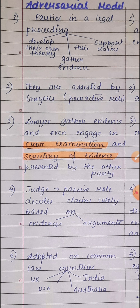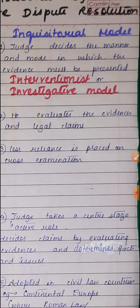The judge decides the claims of both parties solely on the basis of evidence, arguments, and the overall merit of the cases as presented by the lawyers. The adversarial model is followed in common law countries — where the judiciary actively participates in law-making through its decisions, orders, and judgments. India, Australia, USA, and UK are all common law countries.